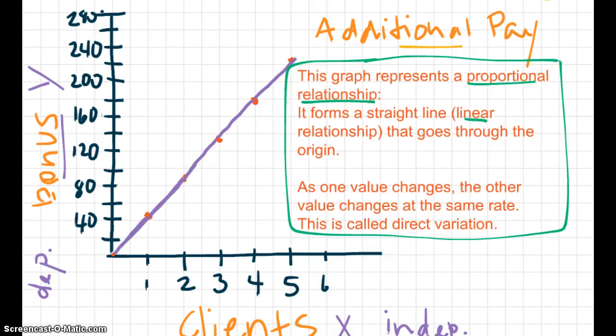In other words, if Silas doesn't have any clients, then he's not going to receive any bonus pay. Then, as one value changes, the other value changes at the same rate. That's important. That's called direct variation.